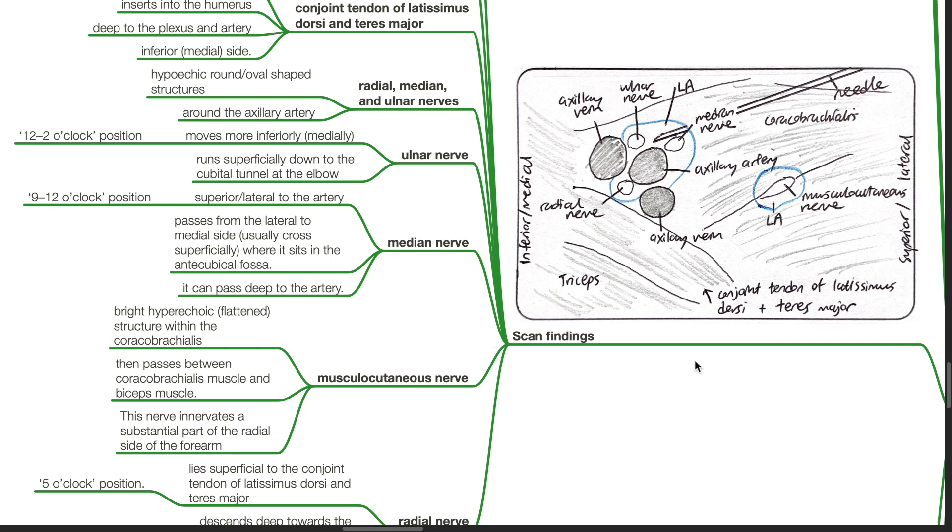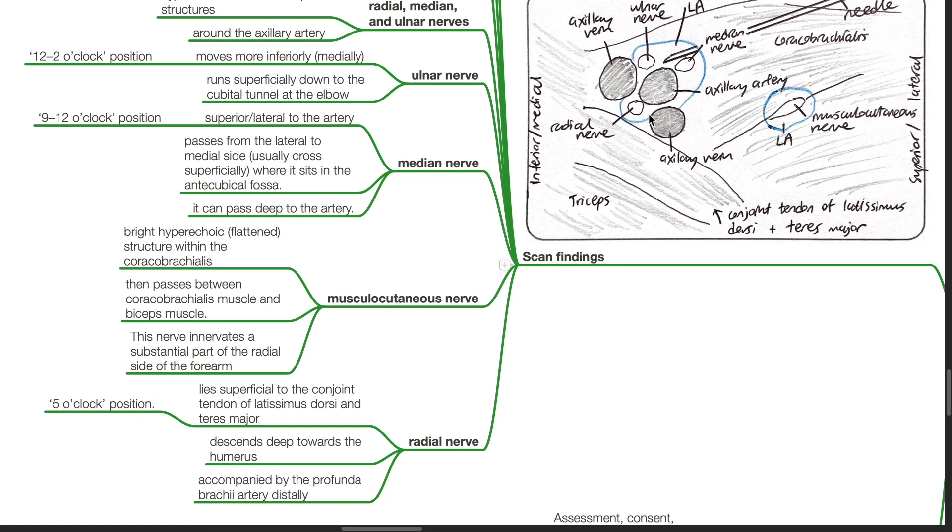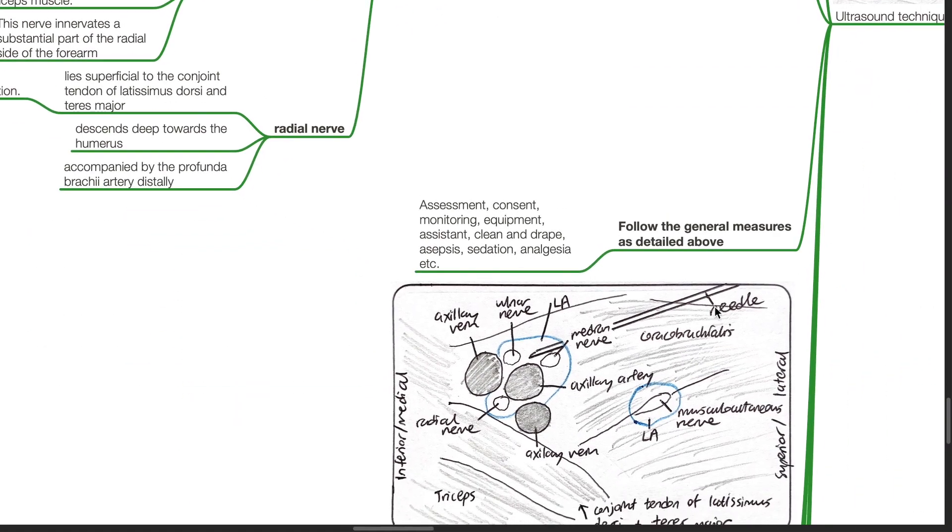The musculocutaneous nerve is bright, hyperechoic, flattened structure within the coracobrachialis. It then passes between the coracobrachialis and the biceps muscle. This nerve innervates a substantial part of the radial side of the forearm. The radial nerve lies superficial to the conjoined tendon of the latissimus dorsi and teres major at the 5 o'clock position. It descends deep towards the humerus and it is accompanied by the profunda brachial artery distally. Follow the general measures as detailed.